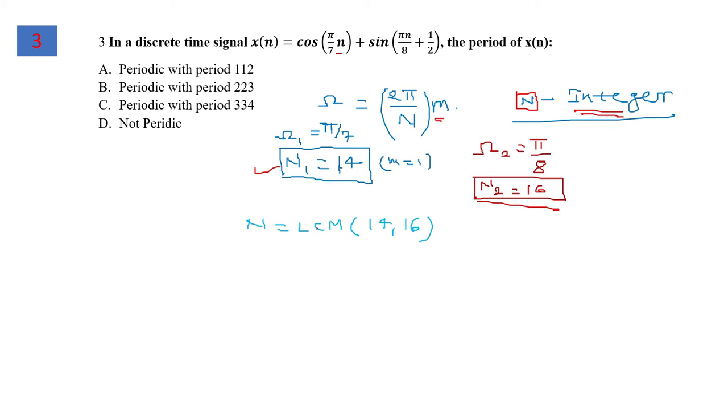Taking the overall signal to be periodic in discrete time, the overall time period is obtained by finding the LCM of 14 and 16. The LCM of 14 and 16 is 112, so the signal is periodic with time period 112.